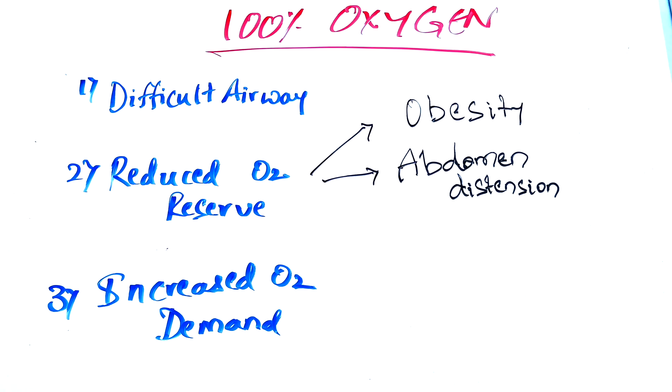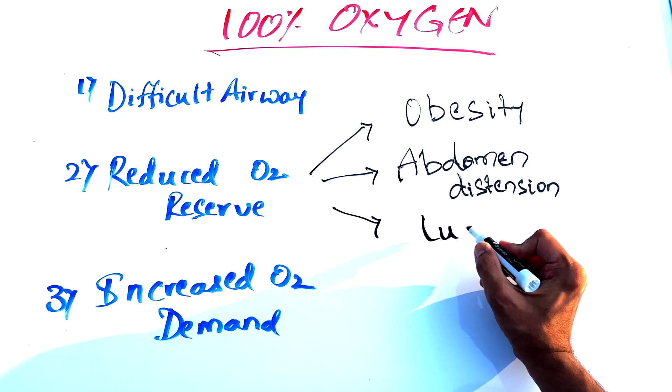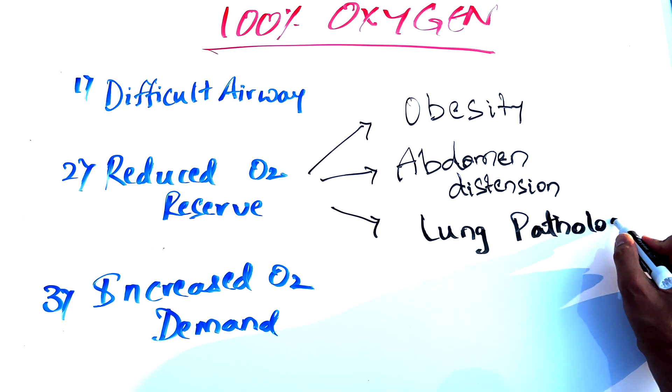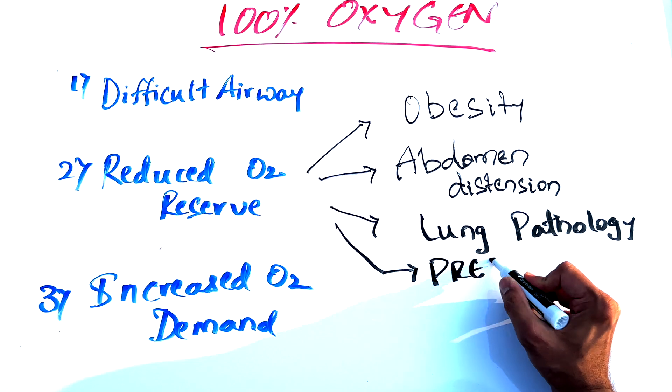Now who are the patients with less oxygen reserve or low FRC? This is someone who is pregnant having a cesarean section, a patient who is obese, or someone who has abdominal distension or problems within the lung.